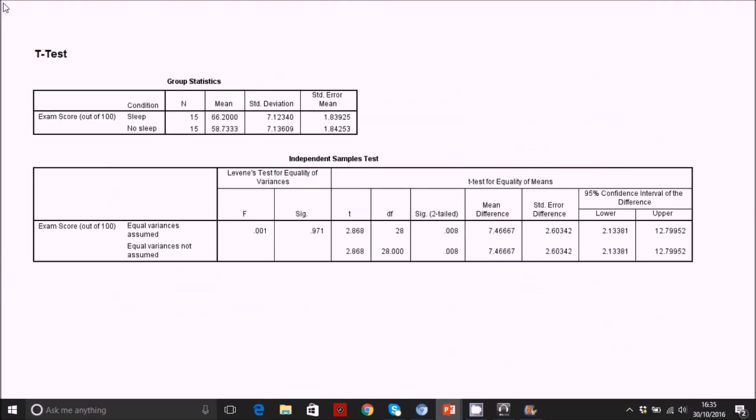Looking at the output, we can look first at the mean scores between the groups. In this table here, the sleep condition scored an average exam score of 66.2, and the no sleep group scored an average of 58.73. So it looks like the direction of the results is in accordance with the hypothesis, in that the sleep group was scoring higher on the exam than the no sleep group.